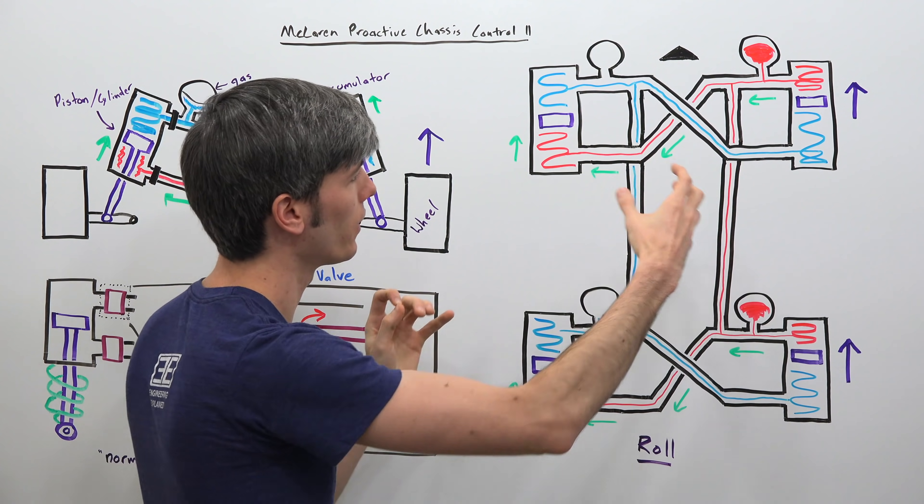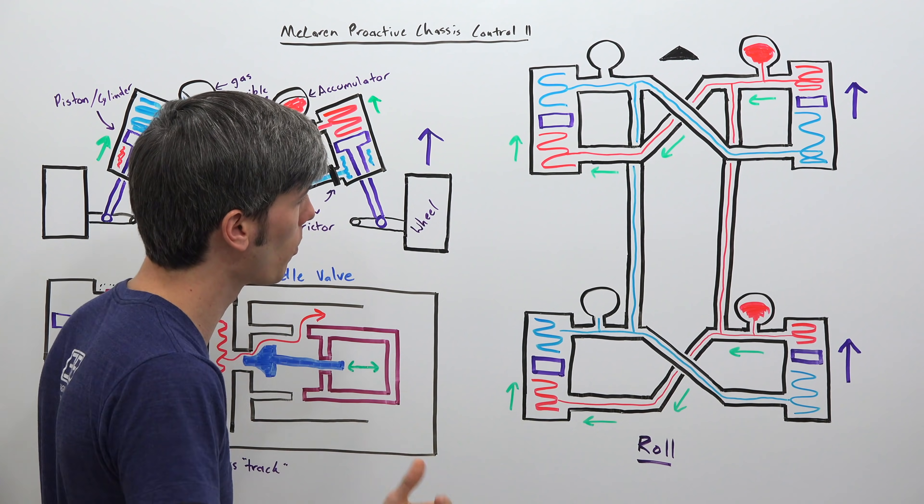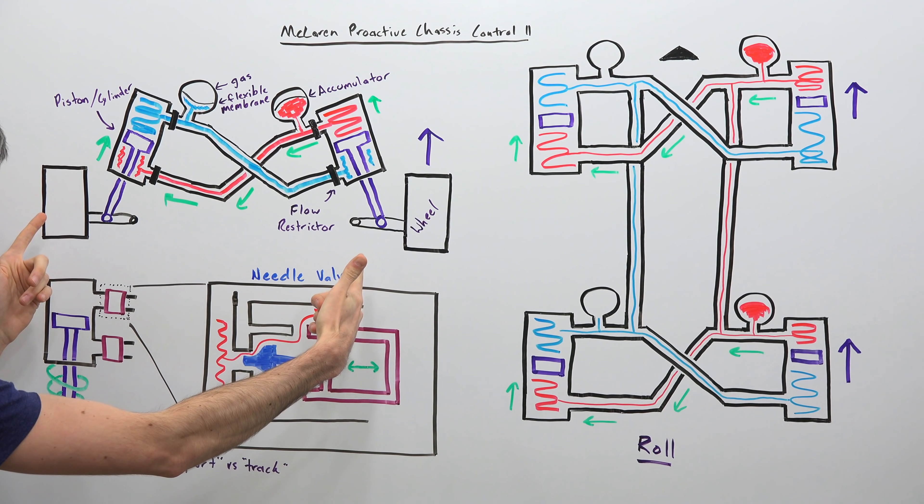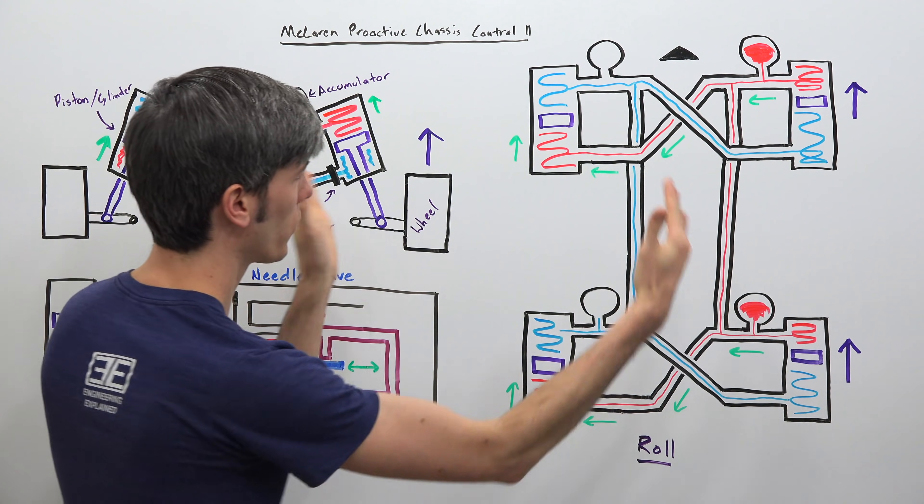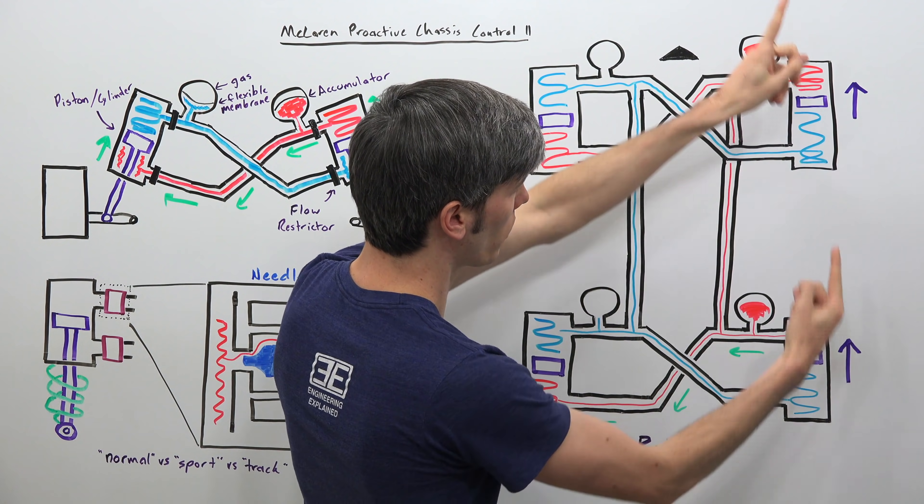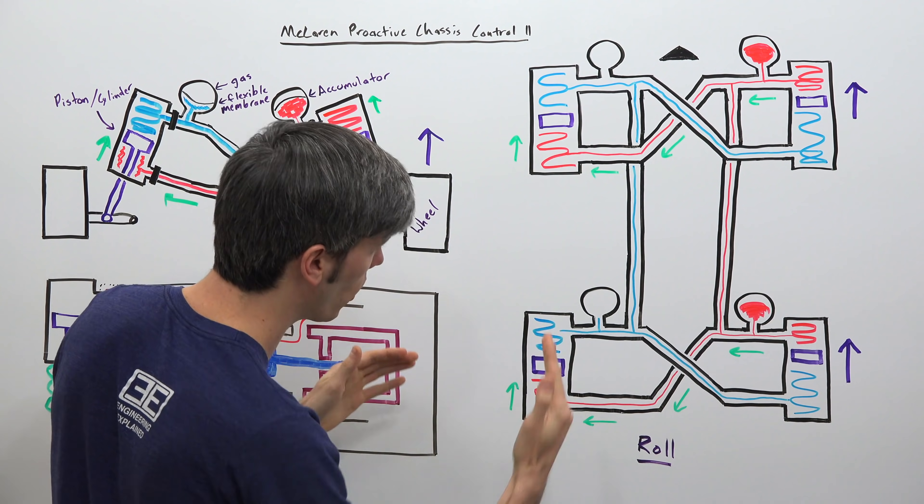And so looking at this kind of graphic here what you need to understand is that red is high pressure, blue is low pressure. And so as this car is taking a hard left hand turn similar to what we've got going on right over here, the car is taking that hard left hand turn, these wheels, purple being where the wheel wants to go, the wheel wants to go up because your car is leaning over.